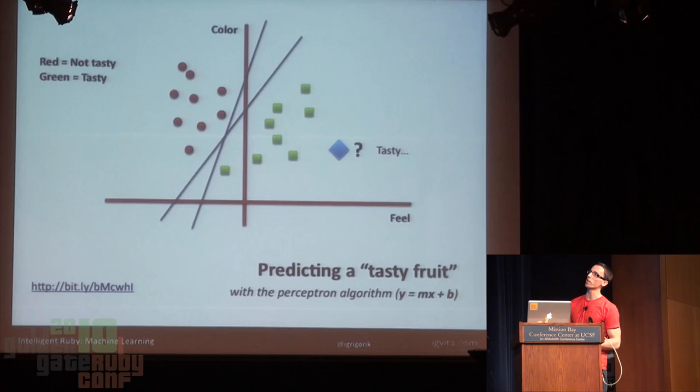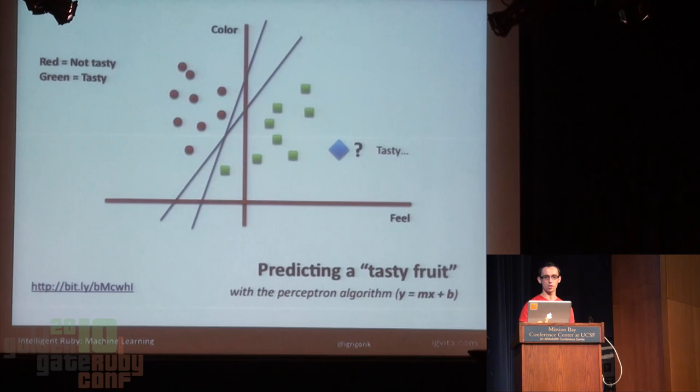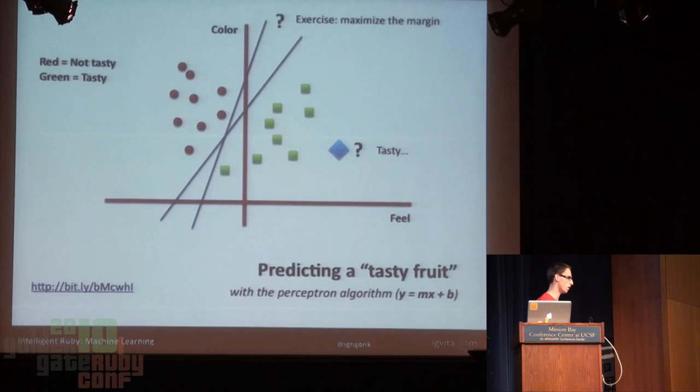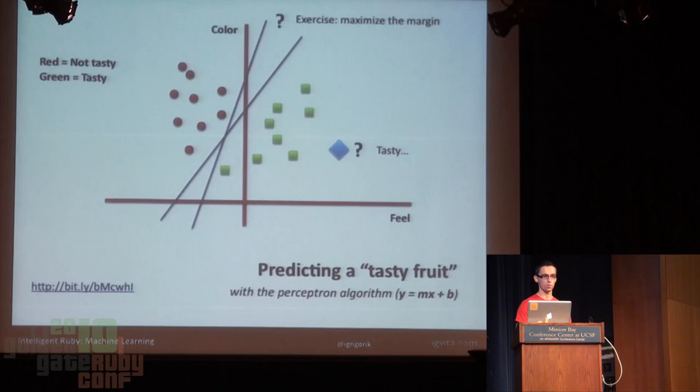Of course, there are many different lines we could have drawn, so it's an interesting intellectual question as to why you'd pick one over the other. In practice, you usually want to find a line that maximizes the margin between negative and positive examples — that's a very good improvement on the perceptron algorithm. You'd be surprised how many problems can be solved with this; it's kind of the foundation of the whole field.